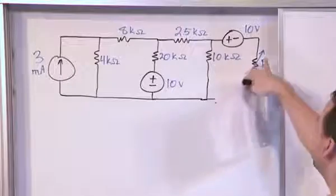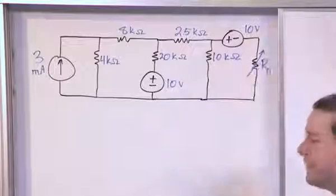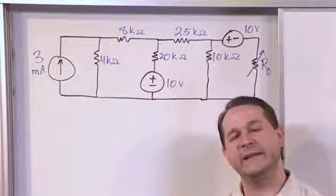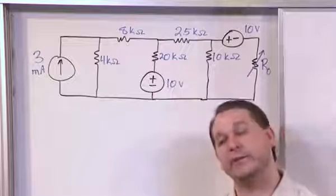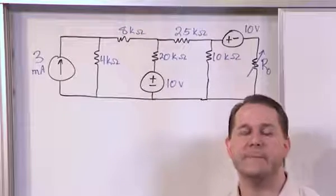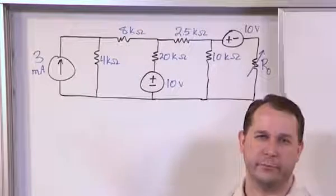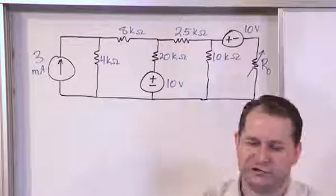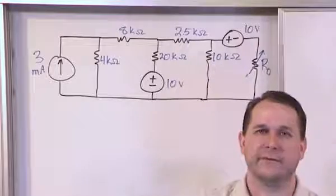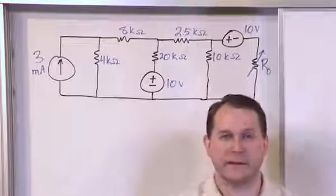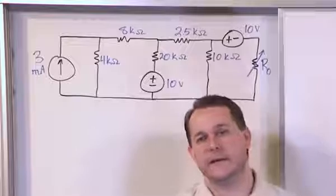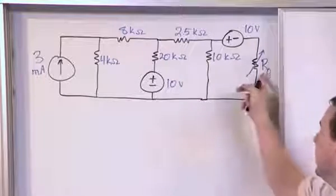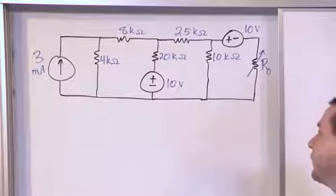Notice R sub naught has an arrow through it. If you see a resistor with an arrow through it like that, that means it's adjustable. So if you have any kind of circuit where you need to adjust the resistance — and you have a knob or something like that — you would draw the resistor with an arrow through it. That just means we can adjust the value of R naught.